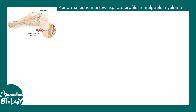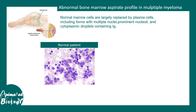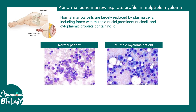Another diagnostic method is bone marrow aspiration biopsy. In a normal biopsy, there is a heterogeneous cell population in the bone marrow. In multiple myeloma, plasma cells are overproduced and overcrowd the bone marrow — this is characteristic of multiple myeloma.